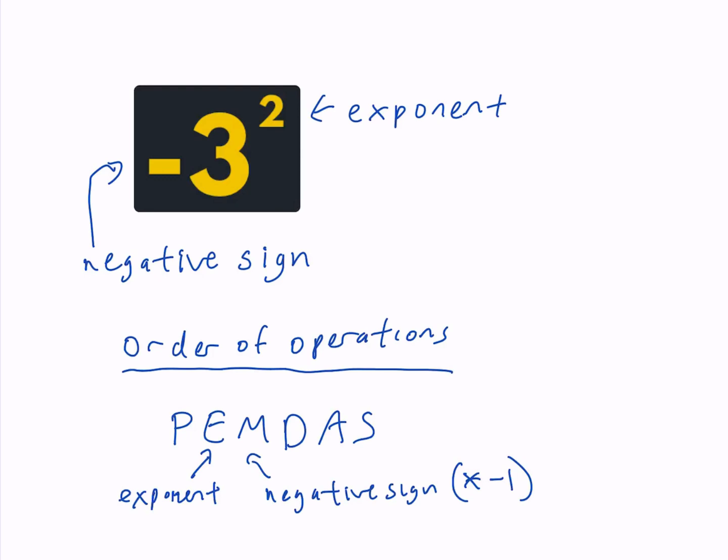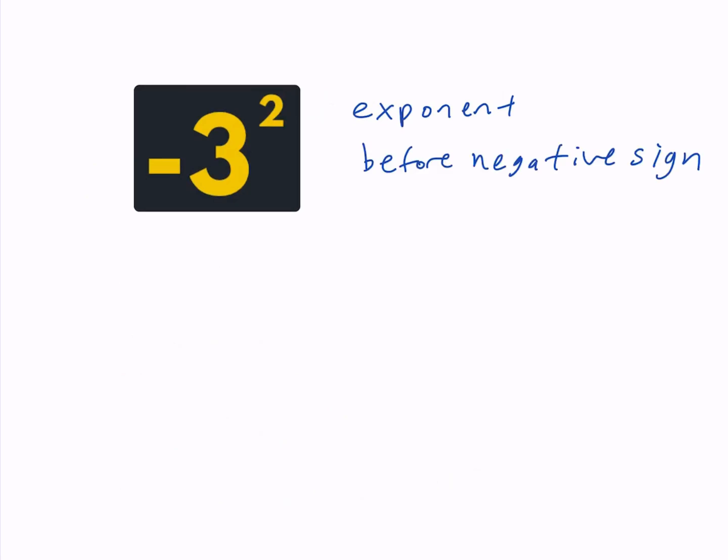So let's take a look at this problem. Remember since the exponent comes before the negative sign, what we really have here is the negative of 3 squared. And since 3 squared is 9, what we have here is negative 9.